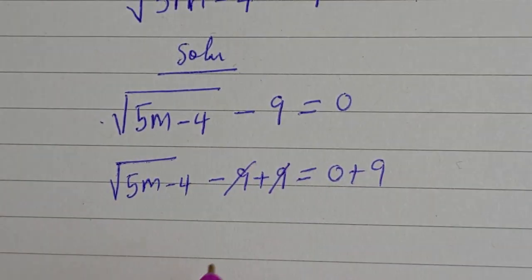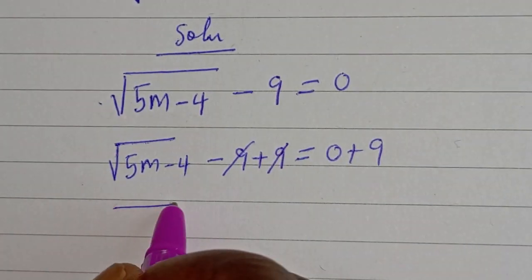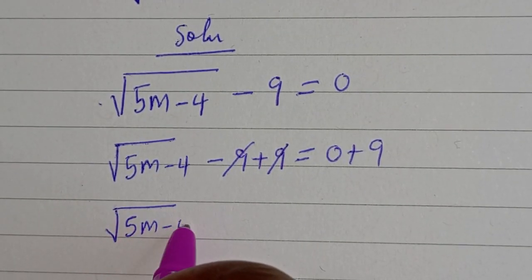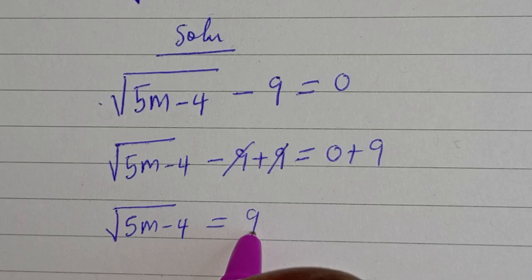This will cancel this. Square root of 5m minus 4 is equal to 9.